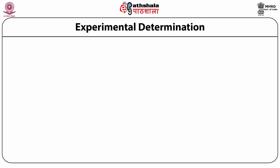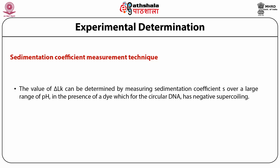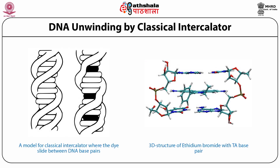Experimental determination of delta LK: sedimentation coefficient measurement is one of the techniques used for the determination of linking numbers. The value of delta LK can be determined by measuring the sedimentation coefficient S over a large range of pH in the presence of a dye, which for circular DNA has negative supercoiling. A typical example is the use of intercalators.